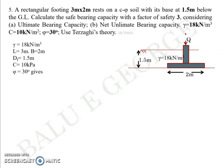From the charts available, you can interpolate the values of Nc, Nq, and Nγ from the value of phi given. So Nc turns out to be 37.2, Nq is 22.5, and Nγ is 19.7.